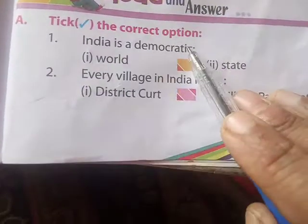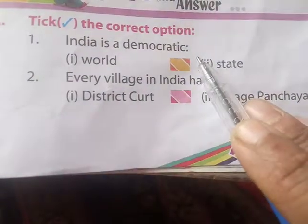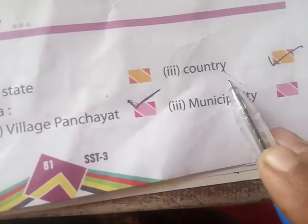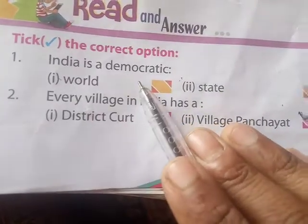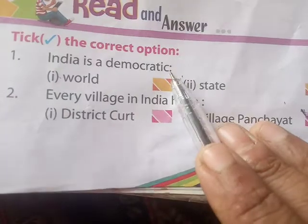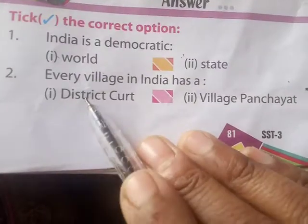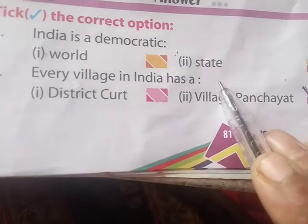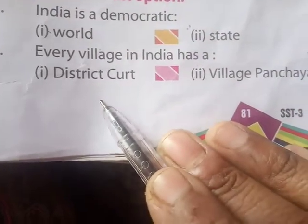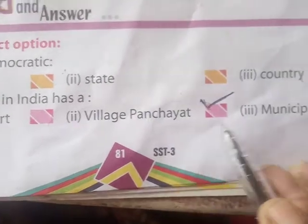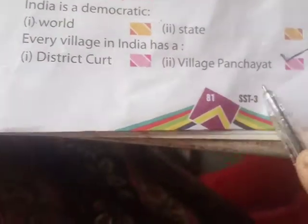A: Take the correct option. Question one: India is a democratic — options are world, state, and country. Answer: India is a democratic country. Question two: Every village in India has a — options are district court, village panchayat, and municipality. Answer: Every village in India has a village panchayat.